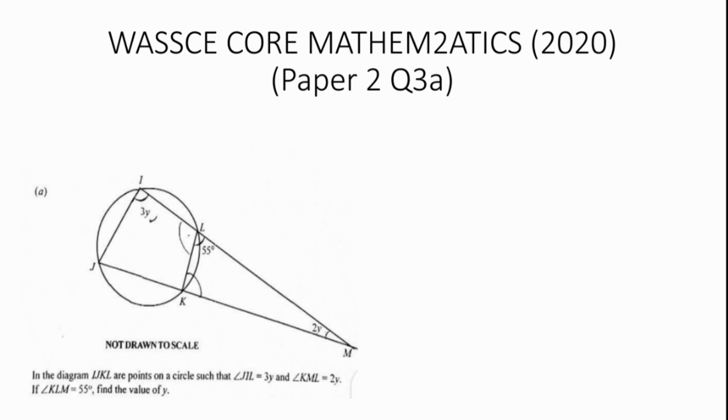In the diagram, I, J, K, L are points on a circle such that angle JIL equals 3Y and angle KML equals 2Y. If angle KLM equals 55 degrees, find the value of Y.